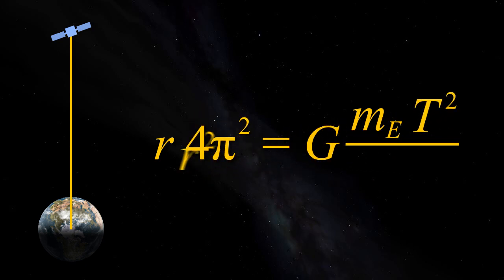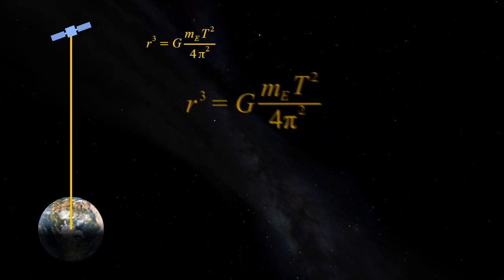Multiplying both sides by t squared r squared, we find that r cubed 4 pi squared equals gm t squared. Rearrange and r cubed is gm t squared over 4 pi squared.